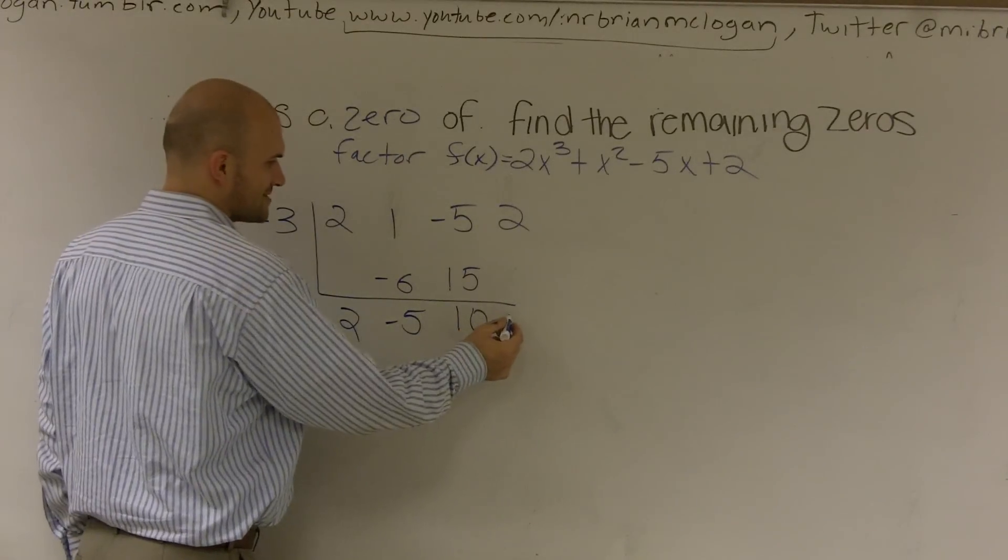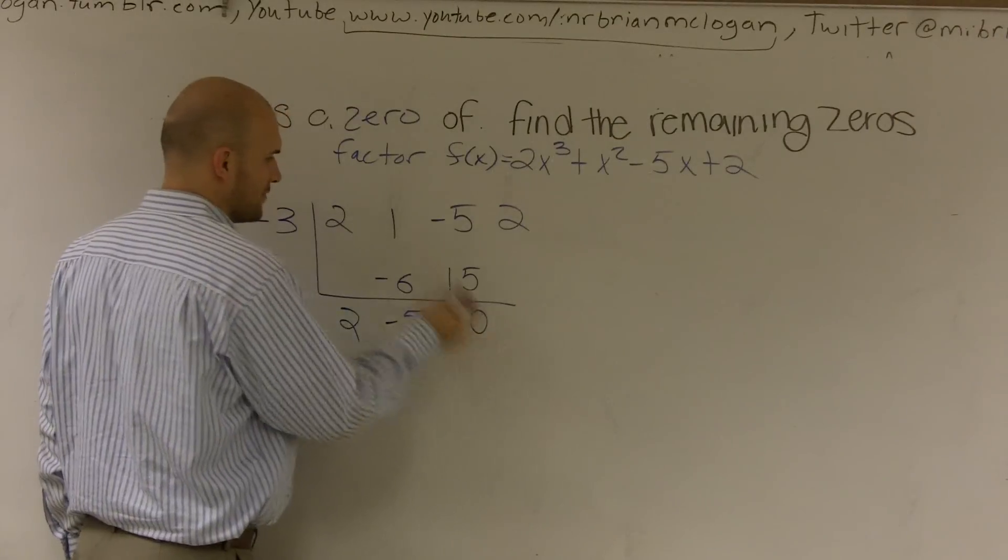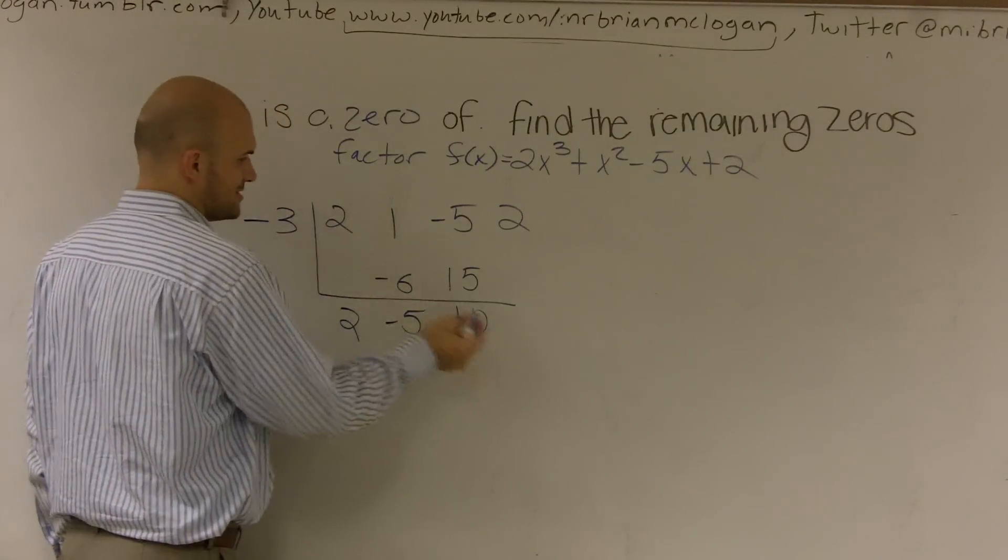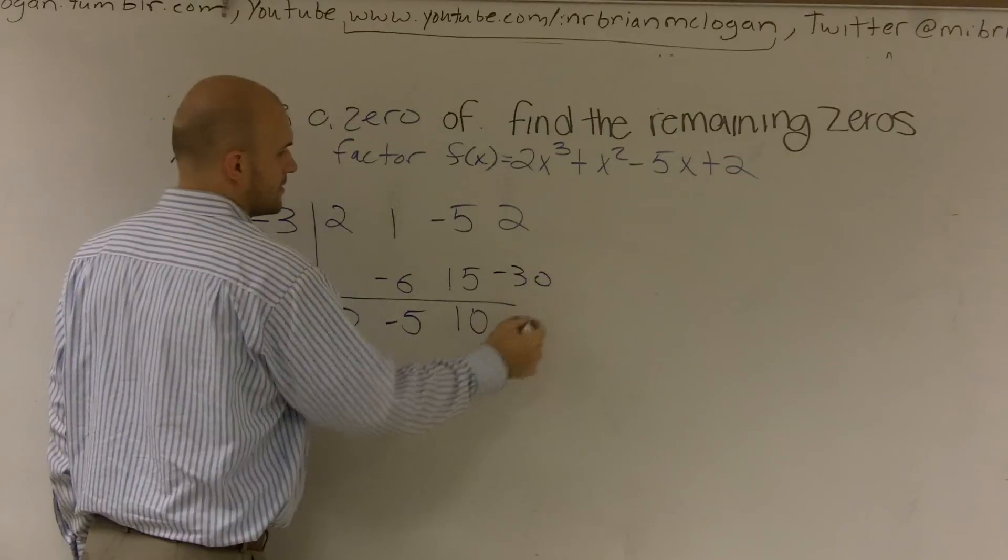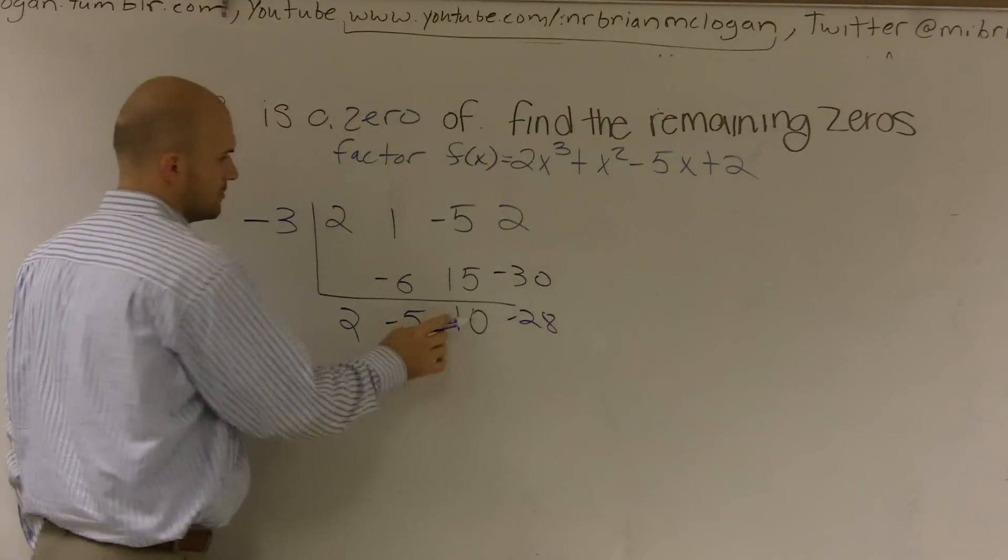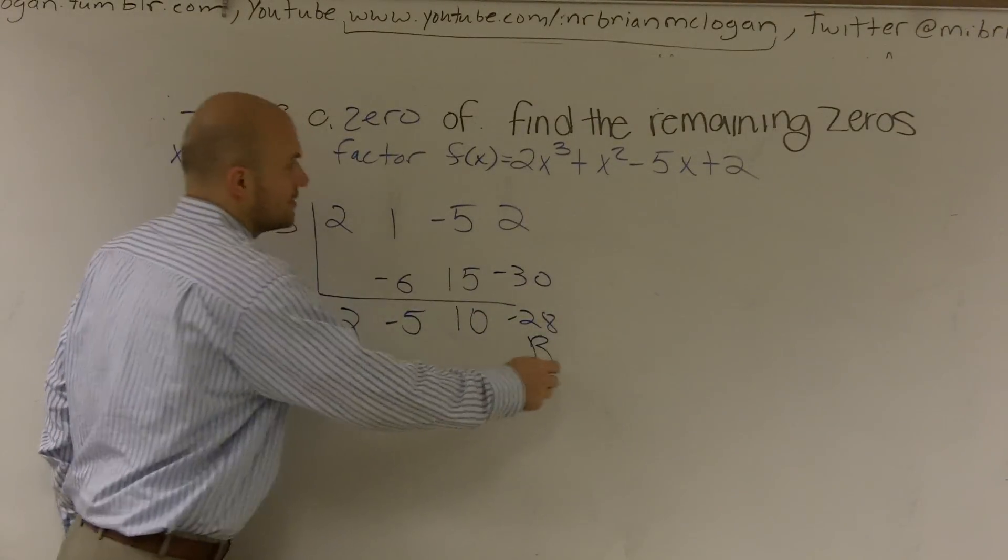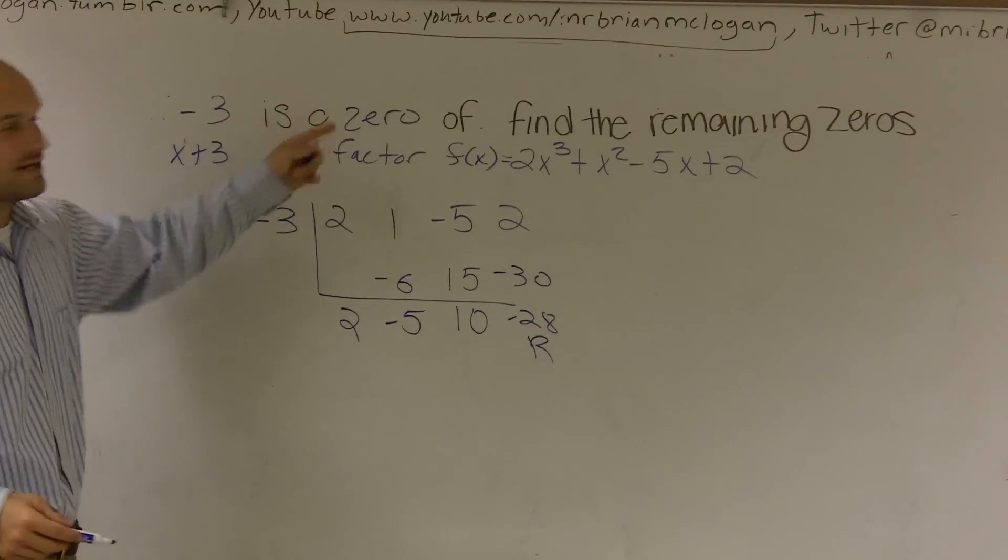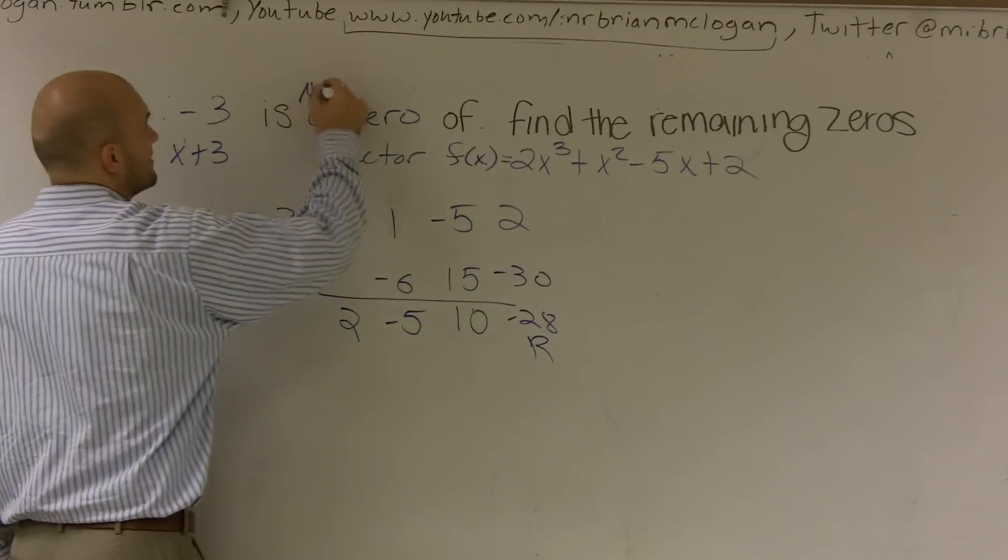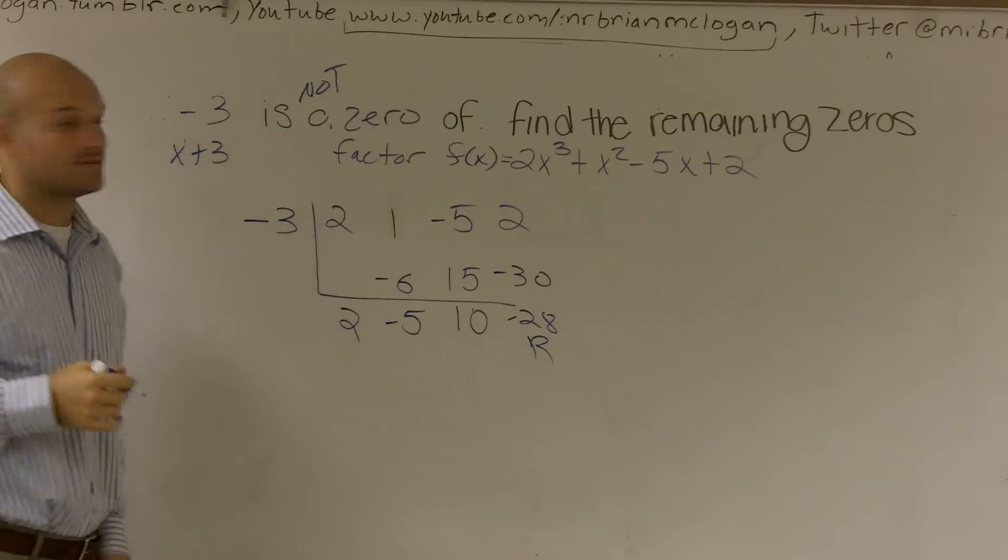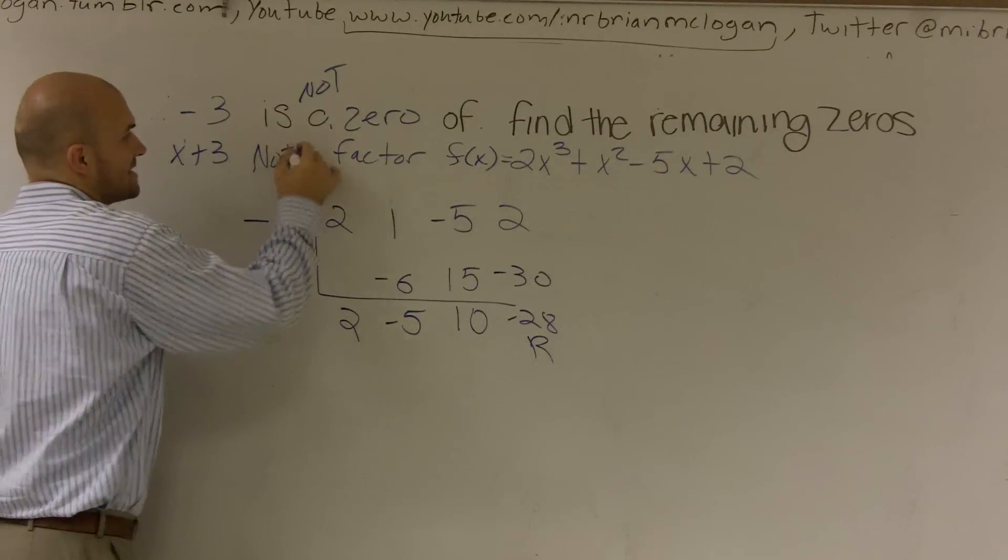It is. So therefore, because I remember I wrote down the problem. So therefore, if you notice, this is a good teaching tool. This becomes negative 30, it becomes positive 30. So negative 3, so you get negative 28. So that means you have a remainder. So therefore, negative 3 is not a zero. Or this is not a factor.